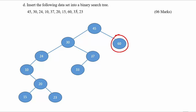The next number is 33 — 33 is less than 45 (left), greater than 30 (right), and less than 37, so it should come to the left-hand side of 37.